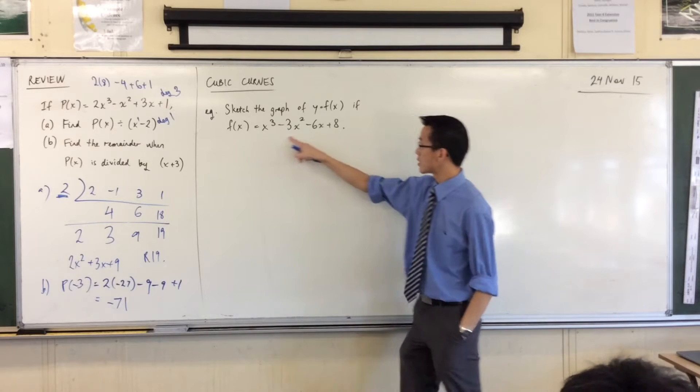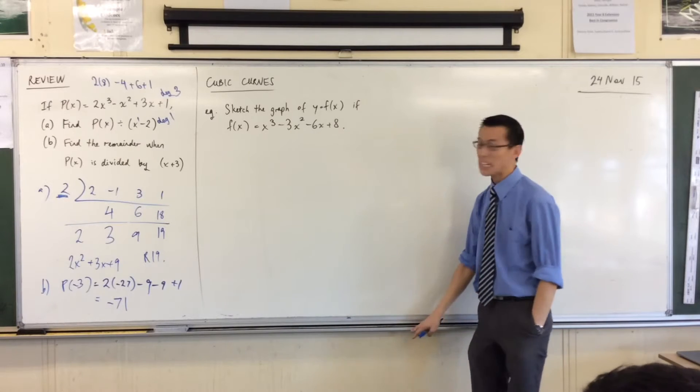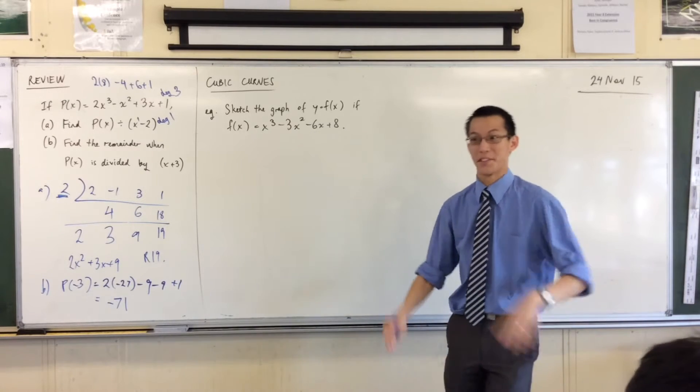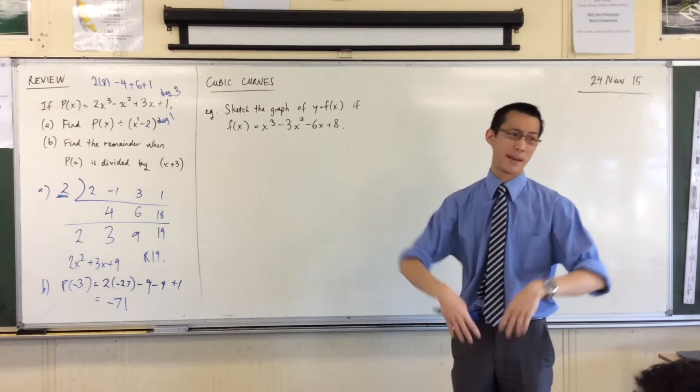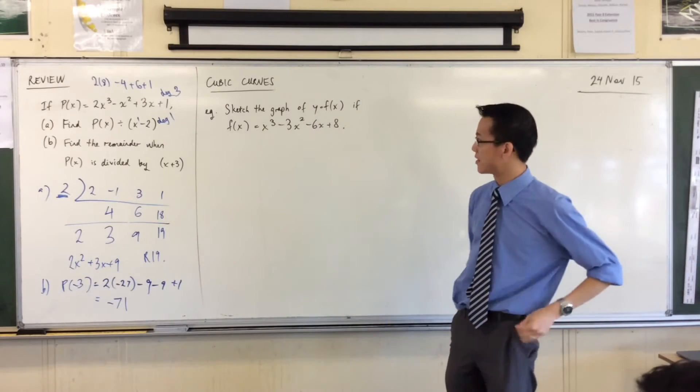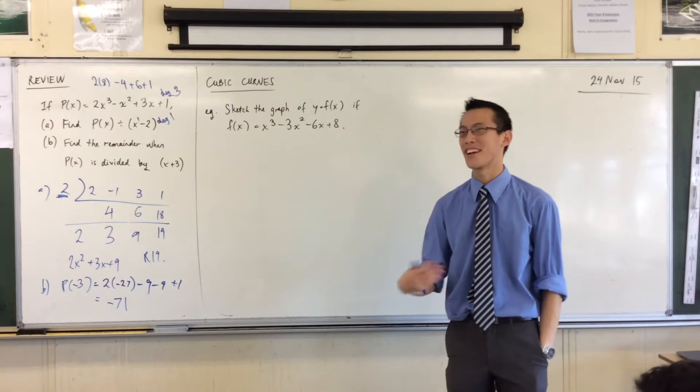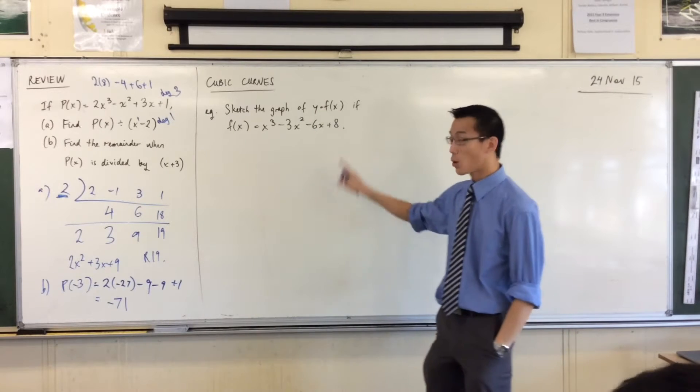Now when you have a look at this, sketch the graph of this, it's a bit of a dog's breakfast. It's a bit of a mess. It's like, how do I even start with this? I could pop points in there. I could make a huge table of values, but that would really suck. That would be a very inefficient way to do it. So what I want is to factorize this.